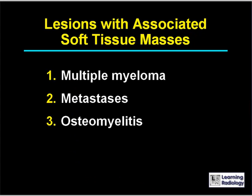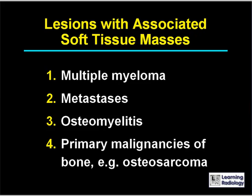The major causes of bone lesions with associated soft tissue masses include multiple myeloma, metastases, osteomyelitis, and a primary malignancy of bone such as an osteosarcoma.